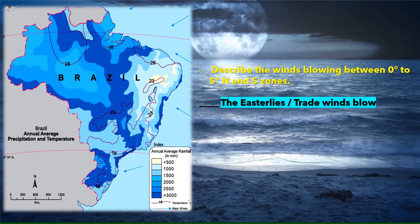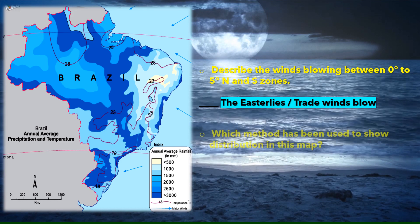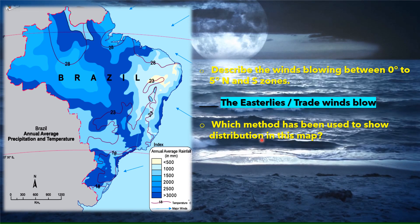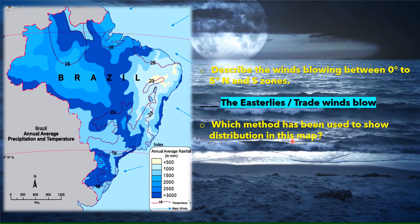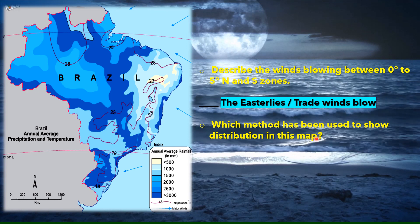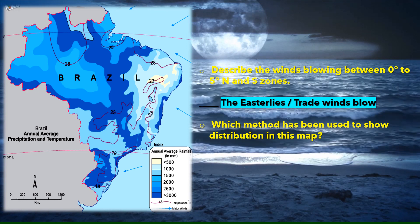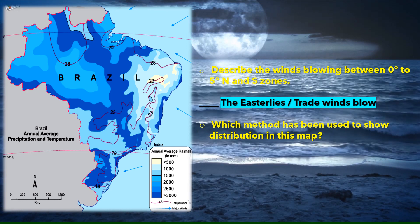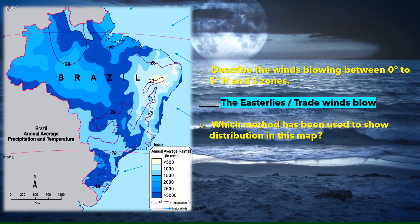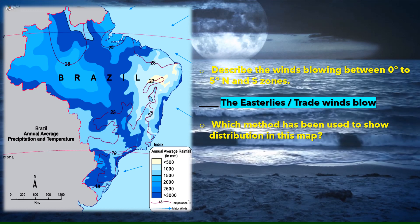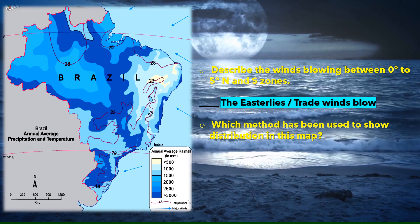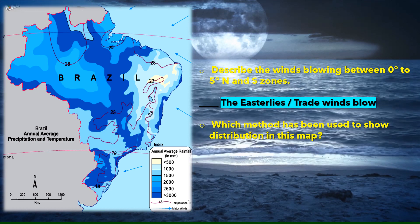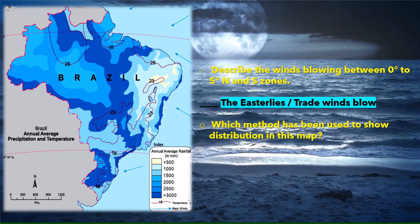The last question: which method has been used to show the distribution on this map? The method used to show the distribution is the isopleth method.